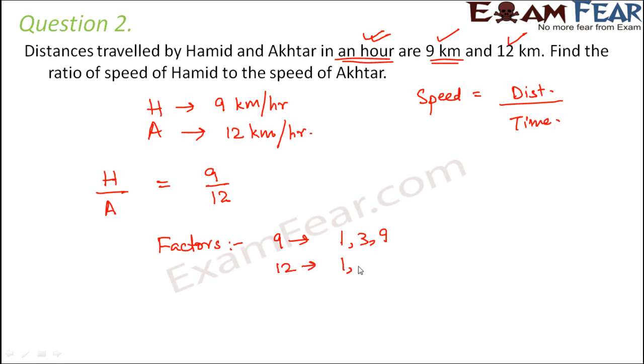For 12, the factors are 1, 2, 3, 4, 6 and 12. So which is the highest common factor? That is 3. So let's divide the numerator and denominator by 3. This would be 3 by 4 which is equal to 3 is to 4. So 3 is to 4 is the ratio of Hamid speed to Akhtar speed.